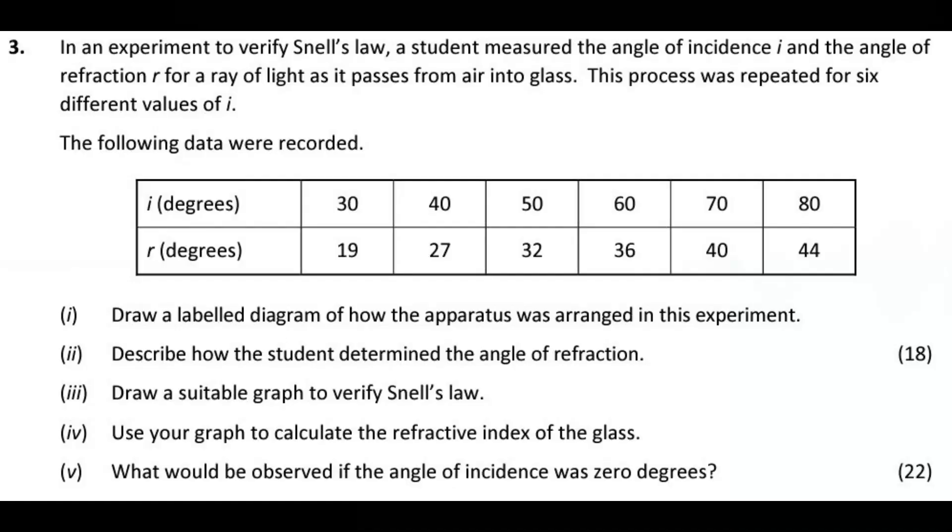Let's have a look at doing an example. So here we're going to take a look at 2022 question three in the Leaving Cert at higher level. And you can see first, of course, draw a label diagram. No problem. That's the first picture you saw. How do they determine the angle of refraction? Make sure to describe how they trace around the block and all the parts of the experiment. Draw a suitable graph to verify Snell's law. We'll talk about that in a moment. And then use it to calculate the refractive index of the glass. Finally, what would be observed if the angle of incidence was zero? Well, it would just go straight through without deviating. So most of the time this experiment's going to be just down to that one point, drawing a suitable graph.